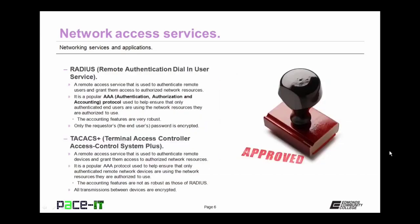Another network access service is RADIUS — Remote Authentication Dial-In User Service. RADIUS is a remote access service used to authenticate remote users and grant them access to authorized network resources. It is a popular AAA protocol — that's authentication, authorization, and accounting. It helps ensure that only authenticated end users are using the network resources they are authorized to use. The accounting services of RADIUS are very robust. The only drawback is that only the requester's password is encrypted — everything else gets sent in the clear.